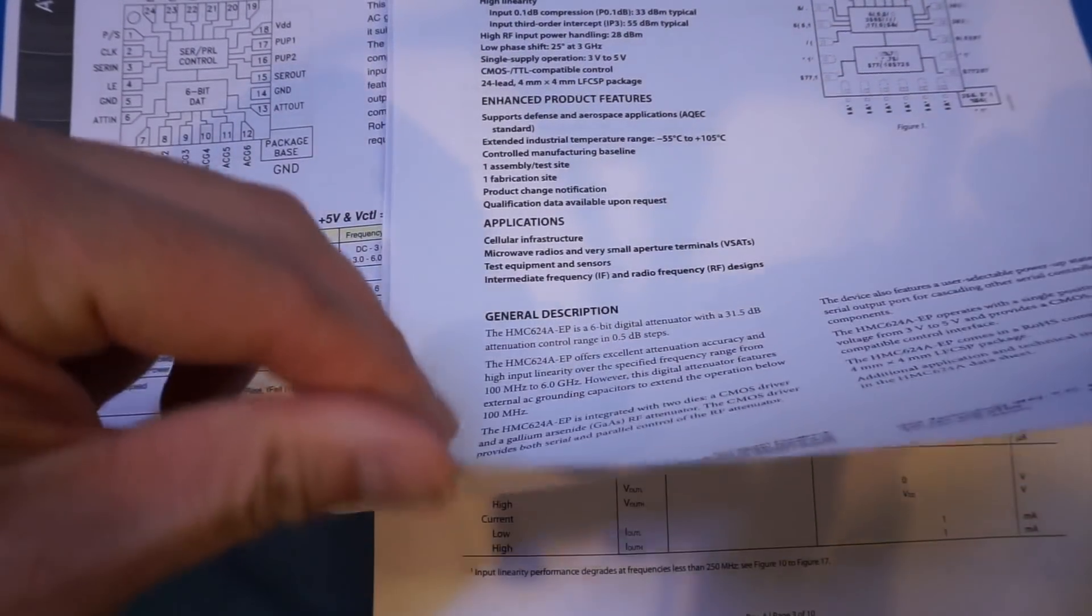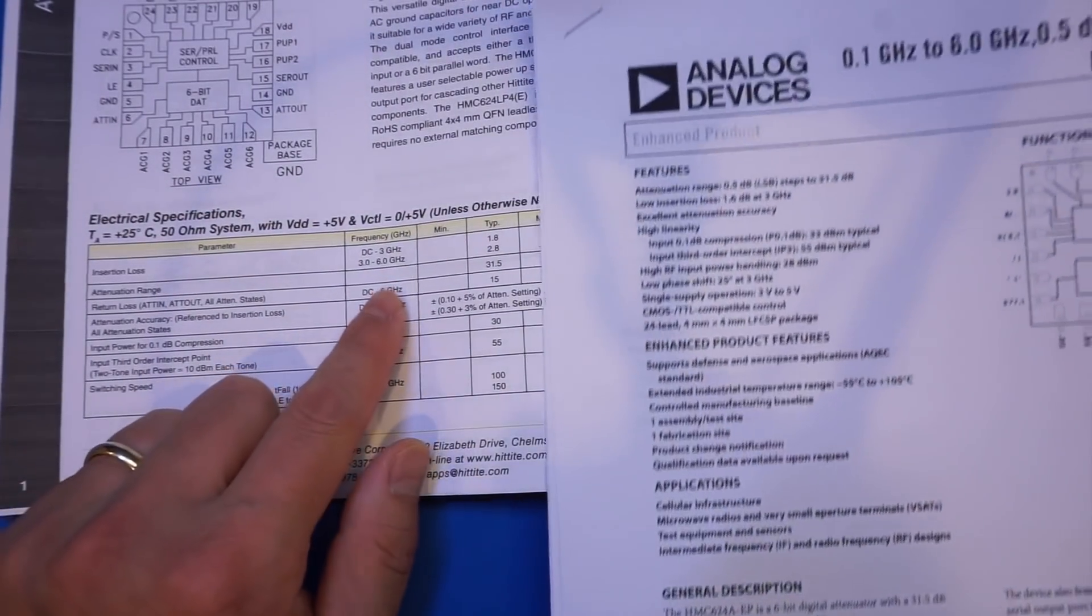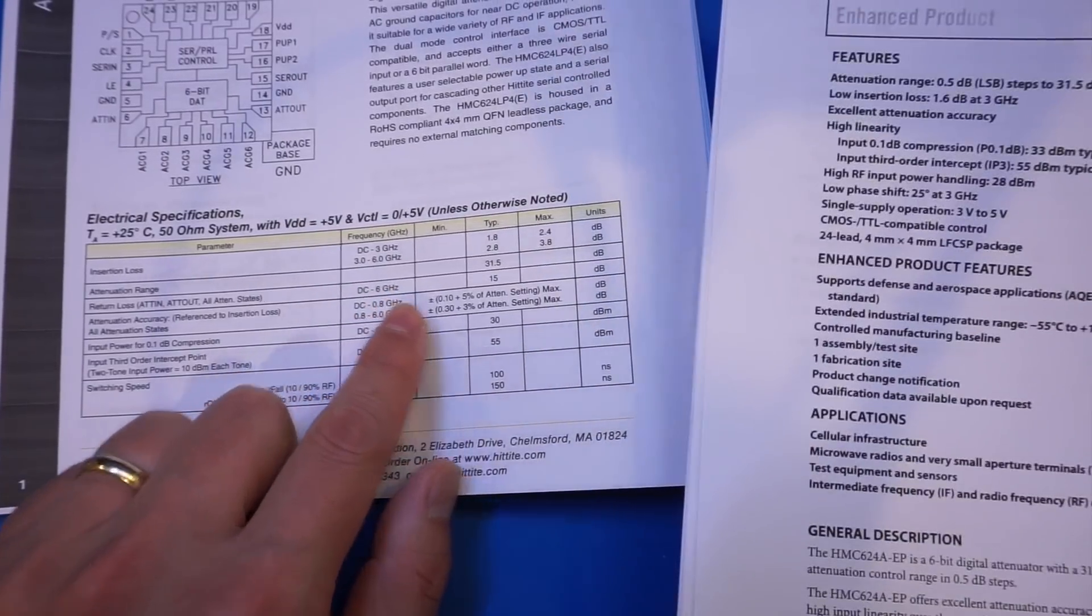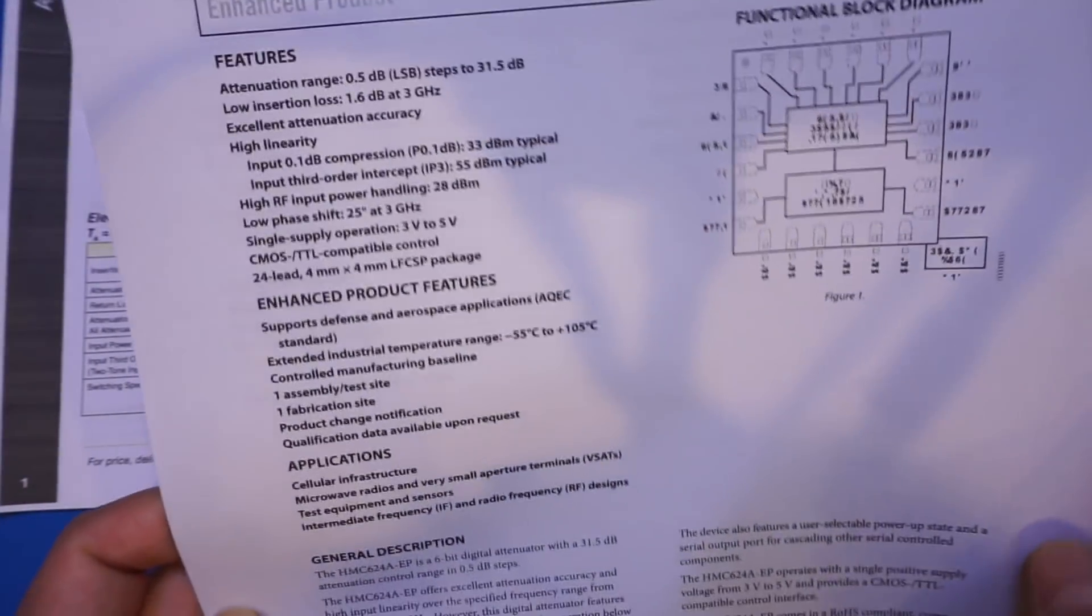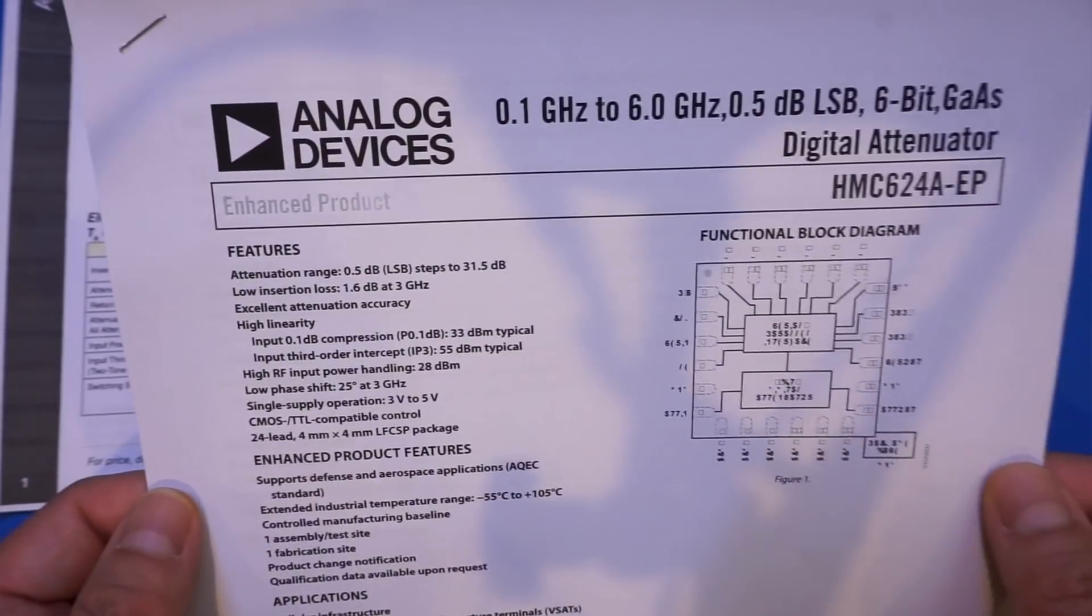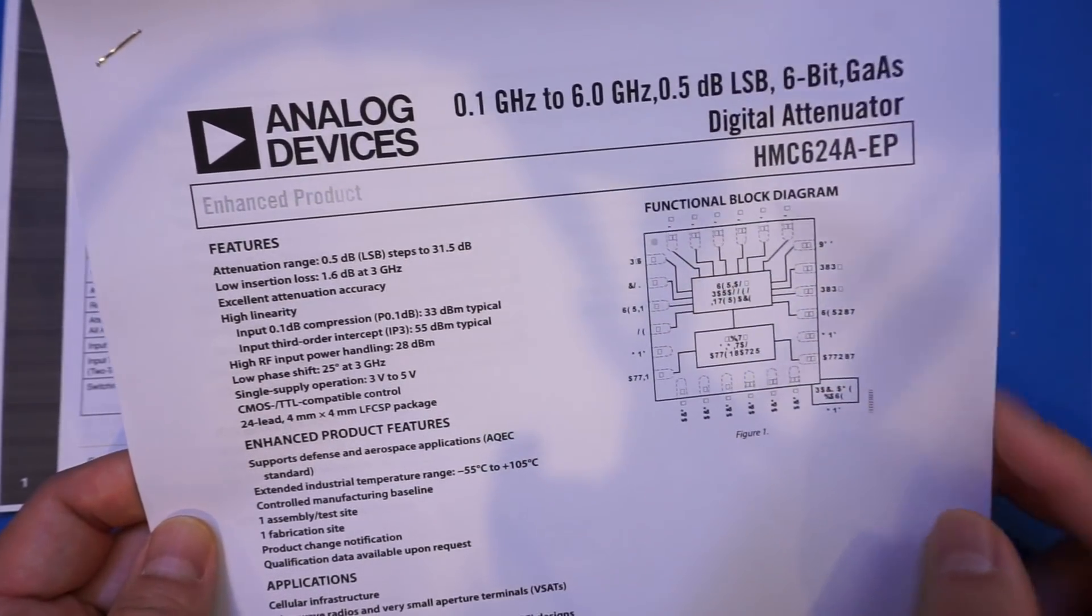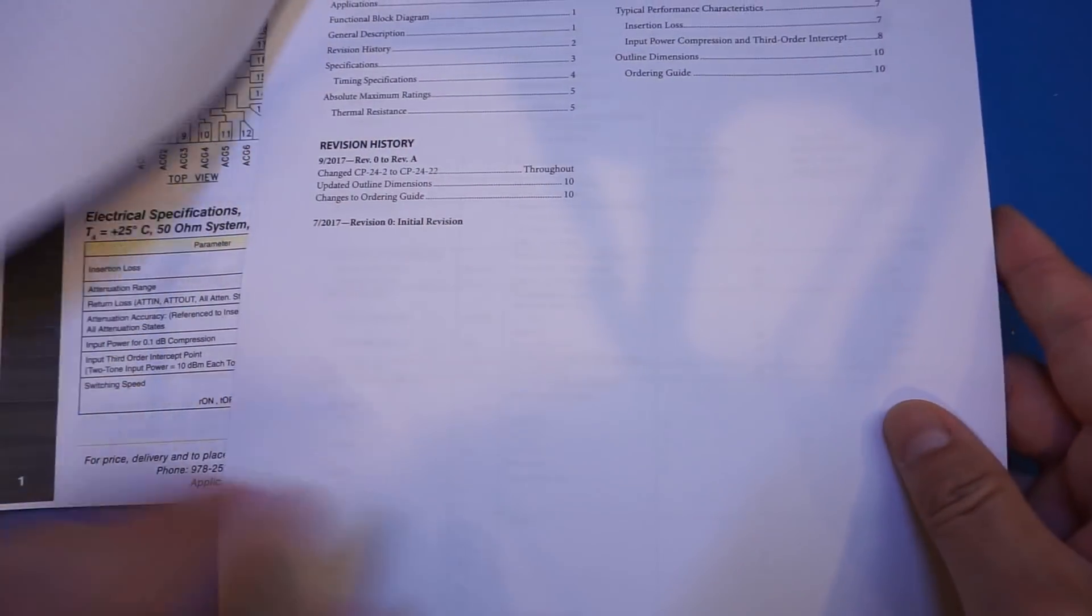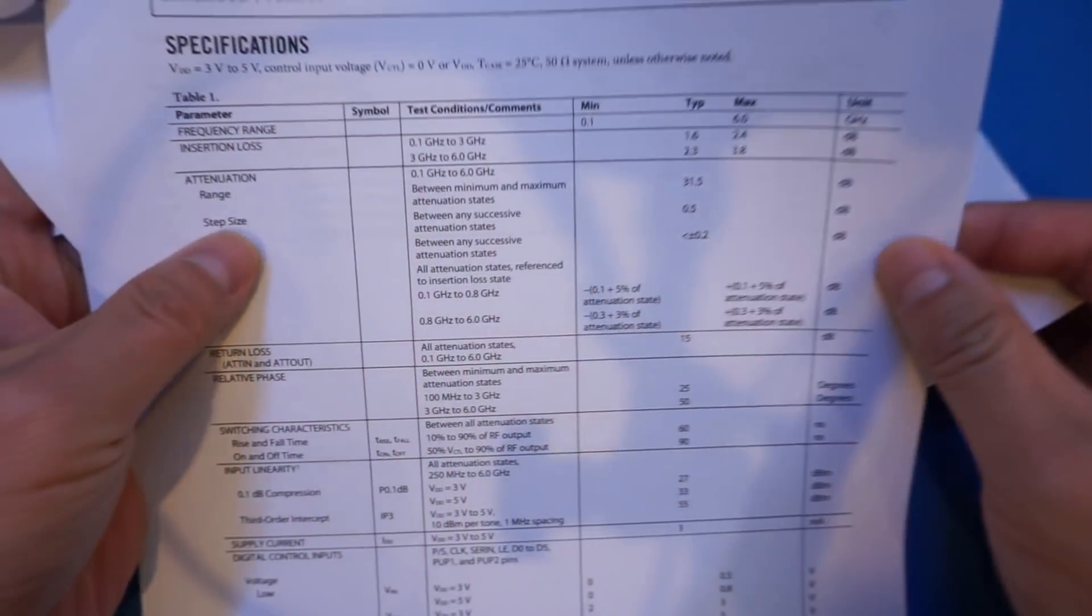And also the specifications for the two chips are almost identical as well. So we can just go through some of the major points here. This one is from DC to 6 gigahertz, and we have some typical insertion loss. This is the Hittite part. And whereas here we have, interestingly enough, the Analog Devices is only, instead of going from DC, it's going from 0.1 gigahertz, which is 100 megahertz, all the way up to 6 gigahertz.